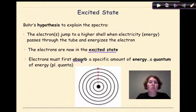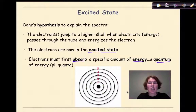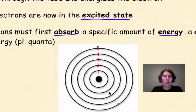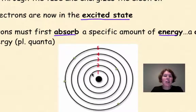Electrons must first absorb a specific amount of energy, which Bohr termed as a quantum of energy. So here we have a little simulation of electrons gaining energy and jumping to higher energy states. Energy comes in and an electron jumps. More energy comes in and an electron jumps from a lower energy level to a higher energy level. More energy, with the electron gaining enough energy to jump multiple levels. And finally, more energy coming in, and the electron jumping farther away from the nucleus.